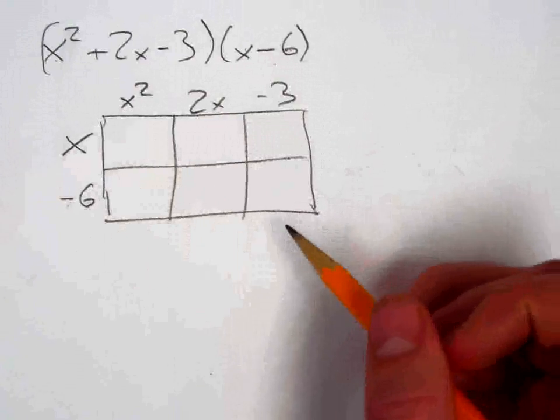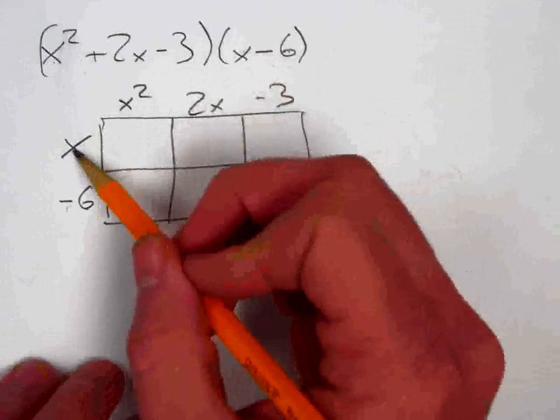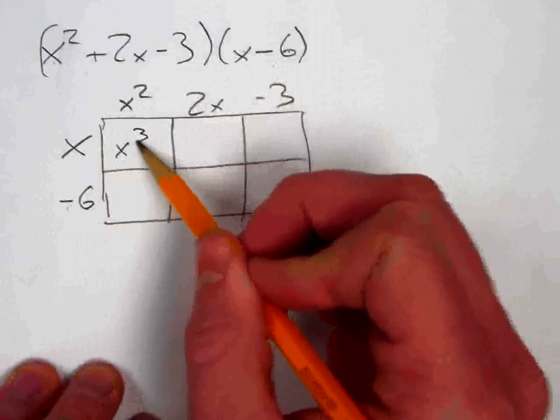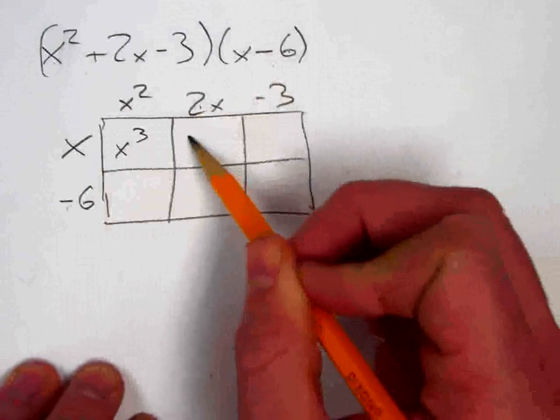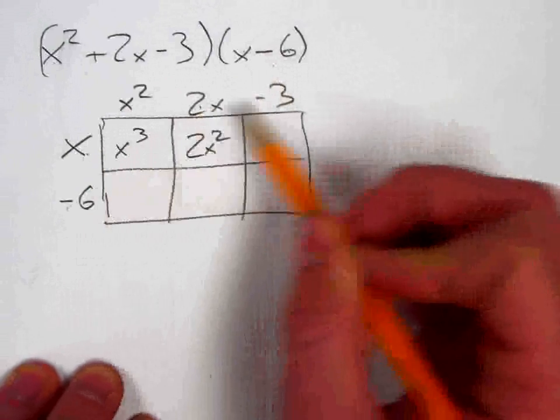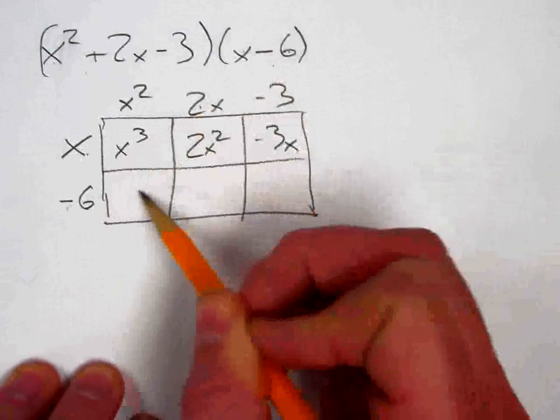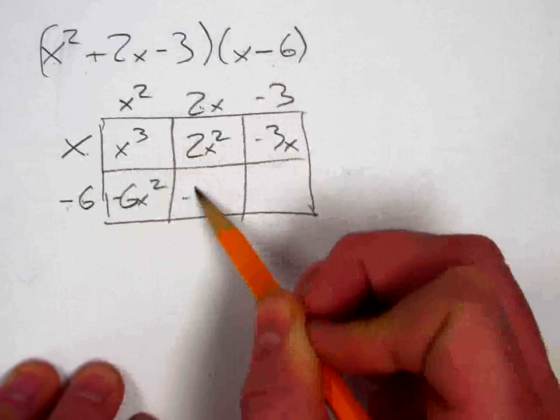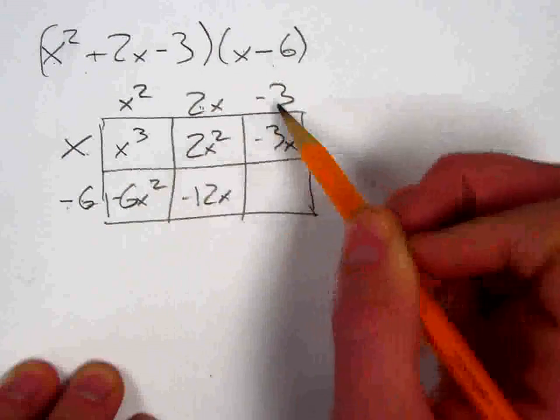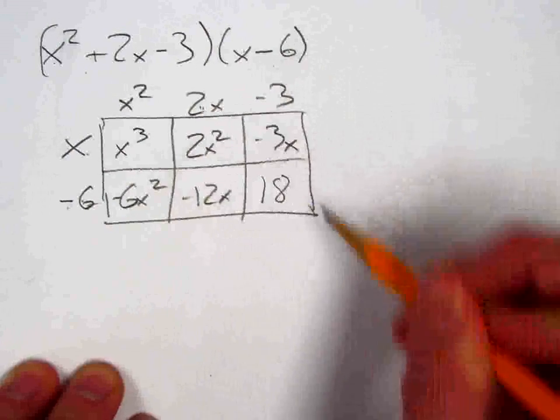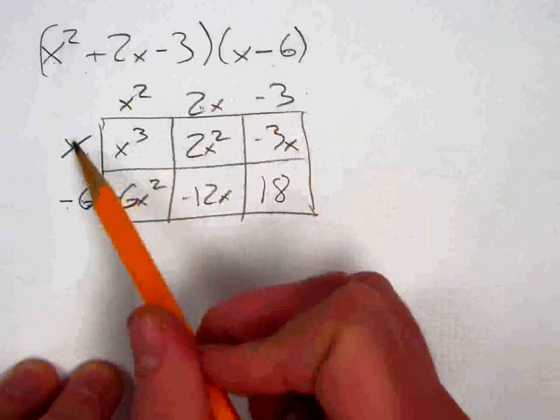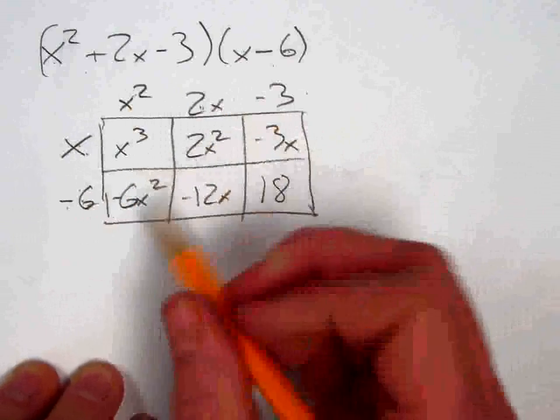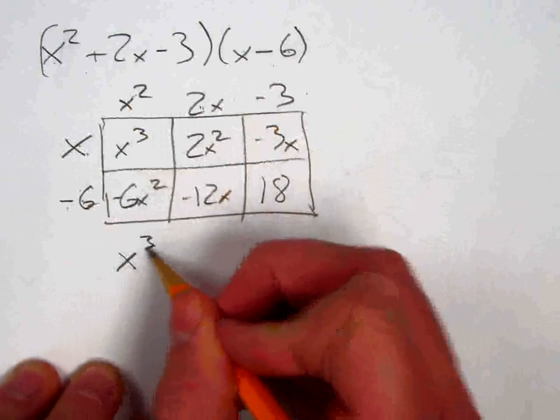And now I'm going to fill in the box just the same way I did in the previous problem by multiplying. So I've got x times x squared is x cubed, x times 2x is 2x squared, negative 3x, and we'll fill in the rest of it. On the outside of my factors, once again, and the inside is my product, so now it's just a matter of combining like terms.